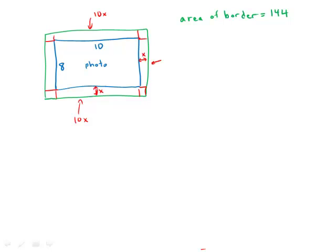We also have a rectangle that is 8X on one side, and four corner squares, each of which has area X squared.